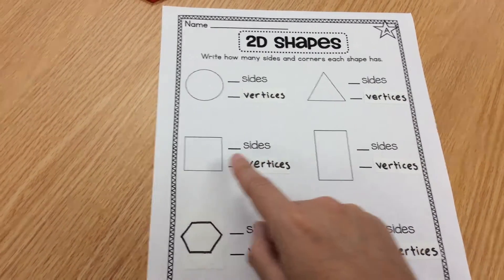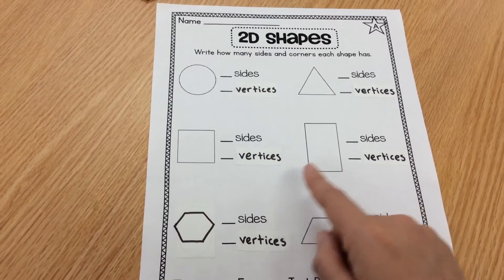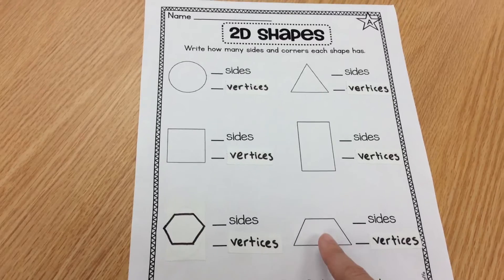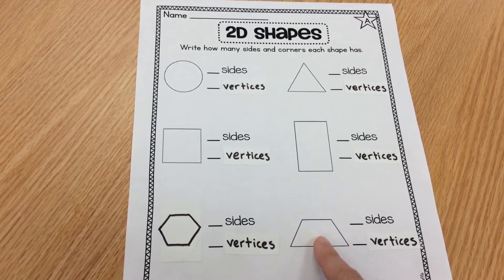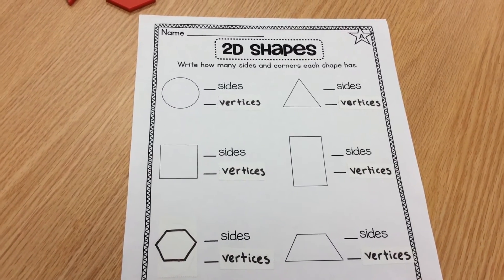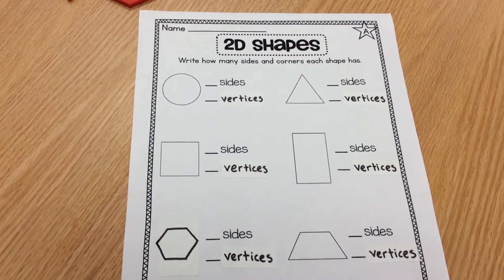Look at a square, a rectangle, a hexagon, and a trapezoid. When you're done, turn it in.